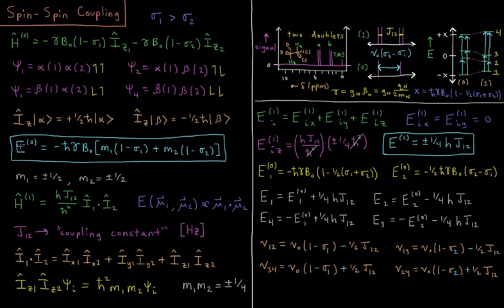Okay, so our zero order energy in this case is going to be minus h bar gamma times the original magnetic field generated by our spectrometer times m one, either plus or minus one half for nucleus one times one minus the shielding constant of nucleus one plus m two times one minus sigma two, the shielding constant for nucleus two, and m two once again being plus or minus a half, depending on whether nucleus two is spin up or spin down.